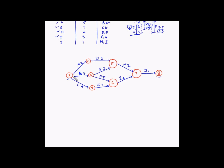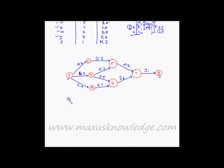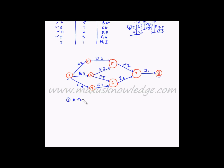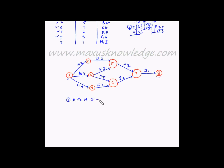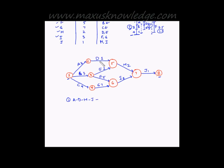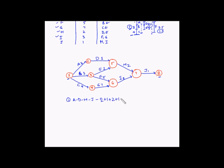Let's figure out all paths and their durations. The first path is A-D-H-J, with durations 2 plus 1 plus 2 plus 1, which equals 6 days.